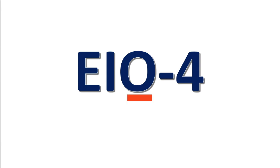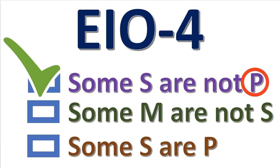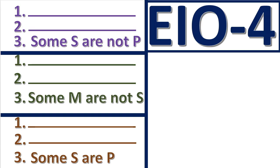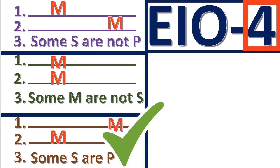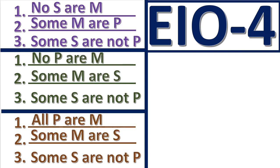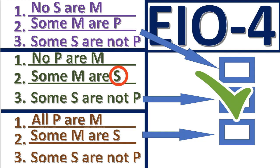Let's work a practice problem. Given this form, what is the conclusion of the syllogism? We always use S for the subject and P for the predicate. Next, where does the middle term go? This is the correct position for a figure four. Next, what is the correct answer? P, which is the major term, goes in the first premise, and S, which is the minor term, goes in the second premise. Very good job on those practice problems.